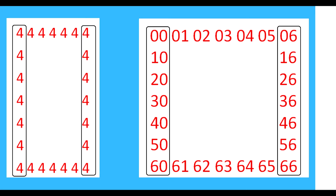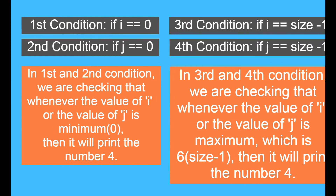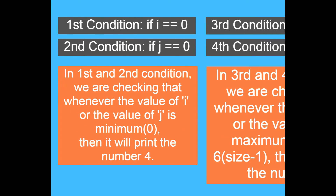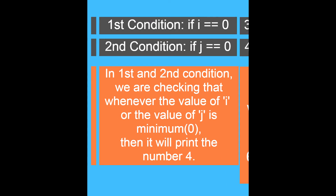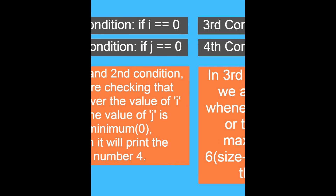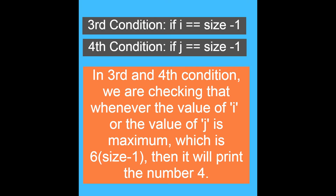Now compare the two vertical lines with their positions — the j index is the same for each element in the columns. For the left vertical column j index is 0, and for the right one j index is 6, which is size minus 1. So we add two more conditions: if j equals 0 or j equals size minus 1, then print number 4. We are now checking four conditions to print the outer square. In the first two conditions we check when i or j is minimum (0), and in the last two when i or j is maximum (6).